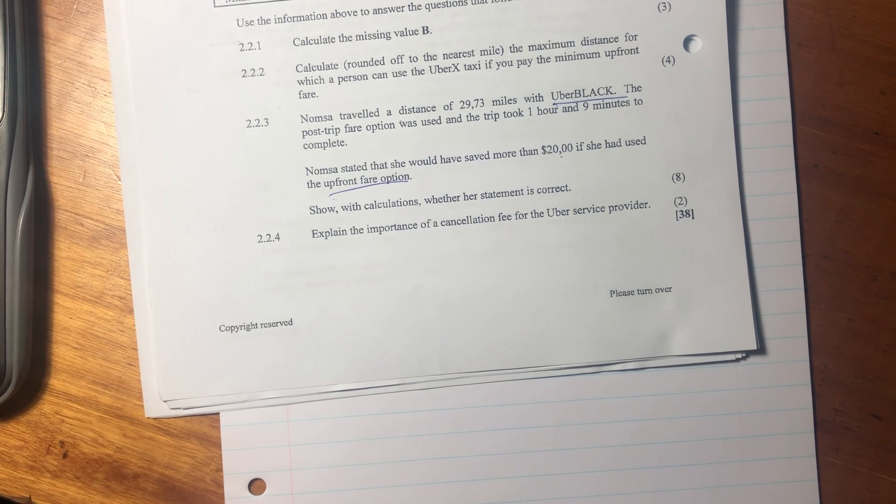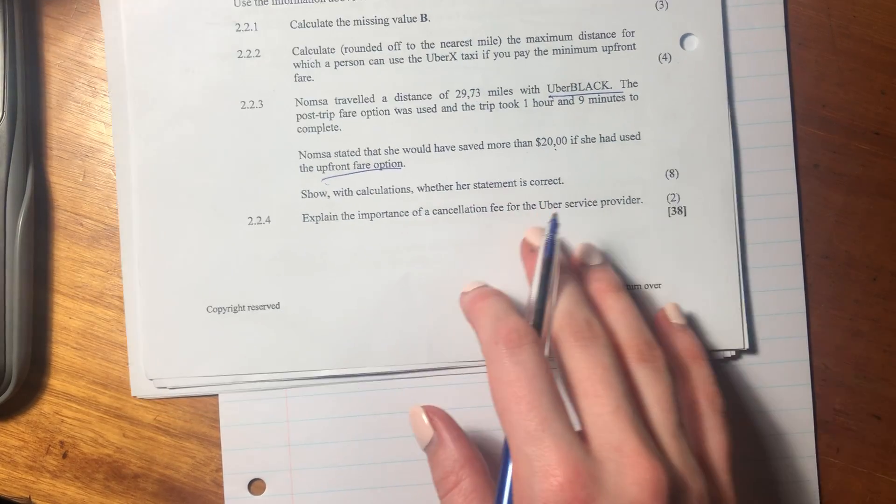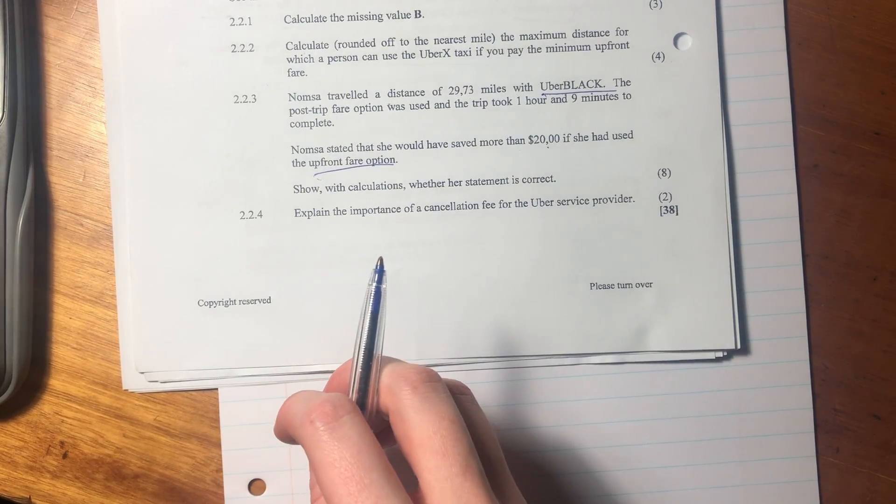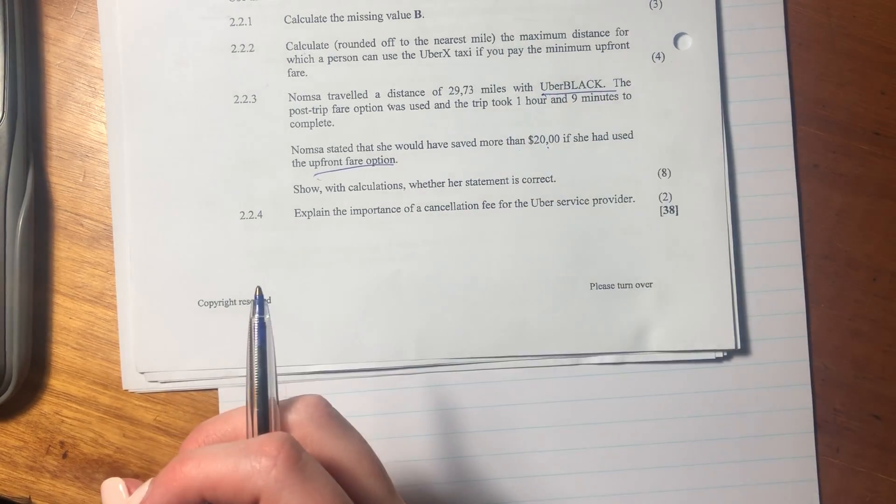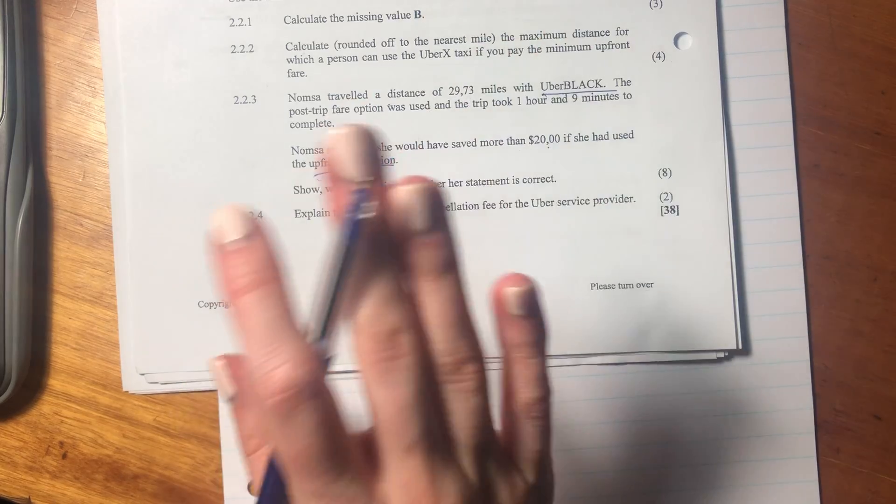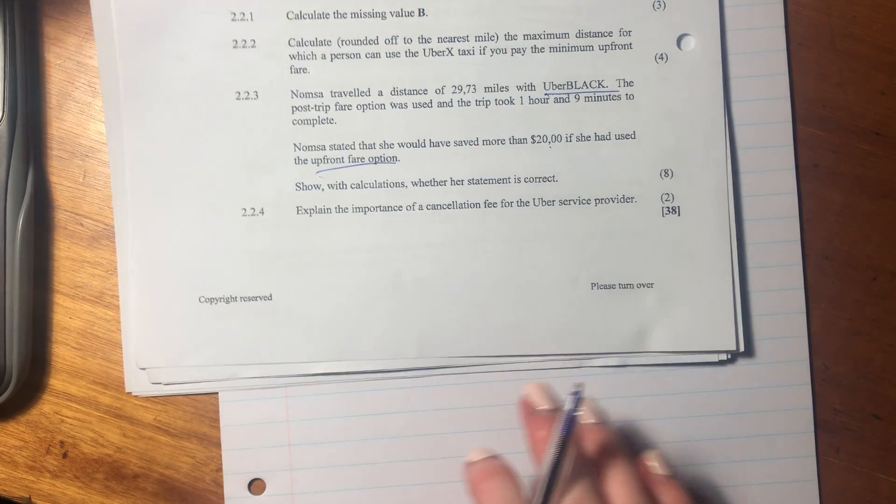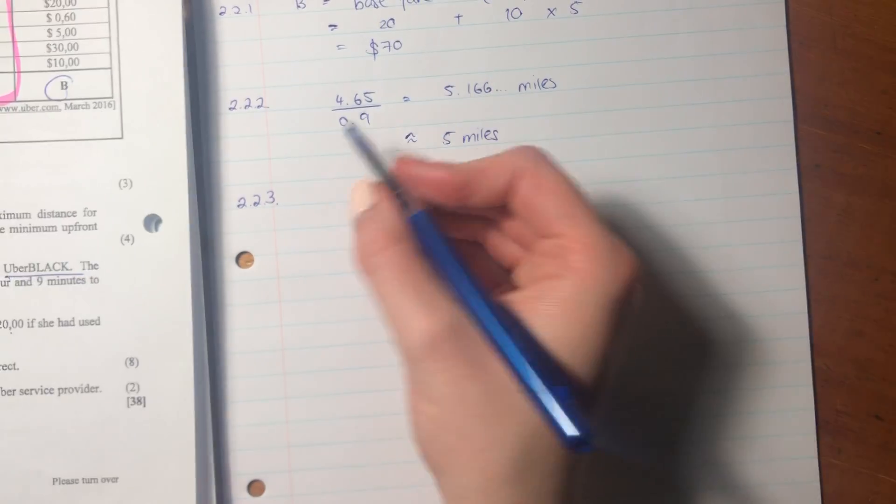Then they say, show with calculations whether her statement is correct. This is a very common question in math lit. They often give you these sort of conclusions that someone's made, and you have to substantiate them or give reason as to why they are right or wrong. So let's basically, what we're going to do is we're going to work out how much it would have cost on the upfront basis and how much it would have cost on the post-trip basis. Compare those two costs and see whether there is a difference of over 20.